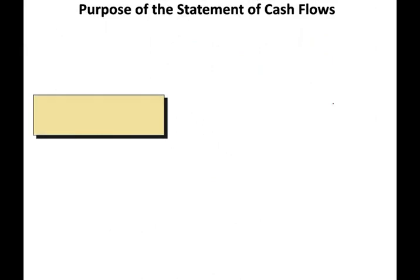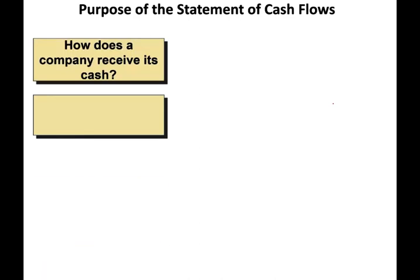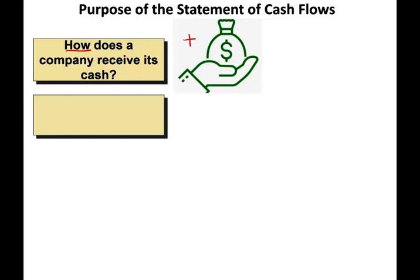The first thing we're going to talk about is the purpose of the statement of cash flows. From a business perspective, if you're an analyst or a user of this financial statement, it tells us how does a company receive its cash. How are we getting this cash? Is it from sales? Is it from common stock? Is it from debt? The cash flow statement clearly shows us where the cash is coming from.